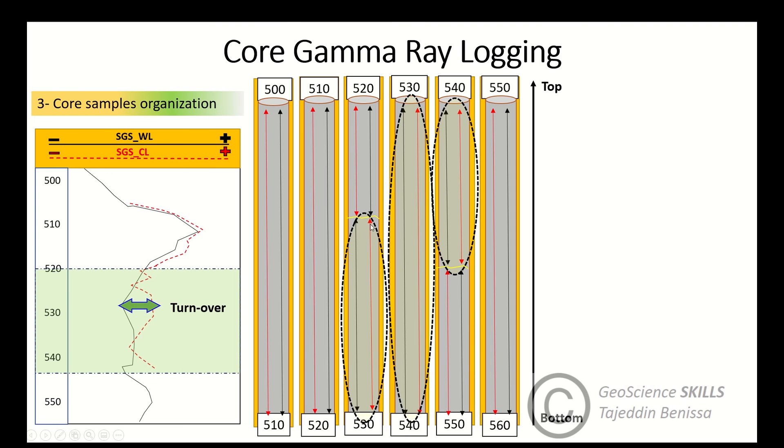We see that the red line now is on the right, not the black line. So this means that there is a turnover. This means that the core samples were not laid properly from top to bottom, and that's why we see the turnover behavior for core gamma ray log.